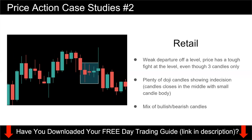What we see at this level is a weak departure. Look at how price barely even went up — in fact there was a very strong rejection here, price didn't take off. The moment price tried to take off, it was slammed back down and you have this very nice hangman or pin bar. Price had a very weak departure and had a tough fight at this level. Even though there are only three candles, you still have to watch the departure — not just count candles. That's the reason I chose this case study: you need to look at both departure and the number of candles.